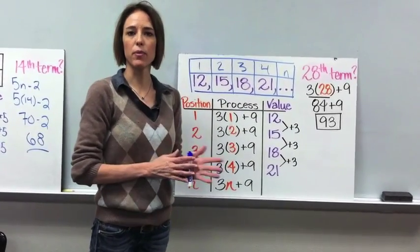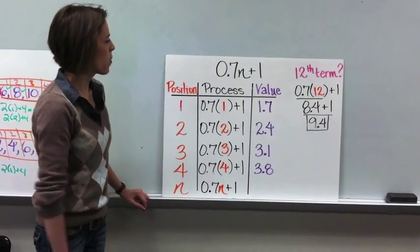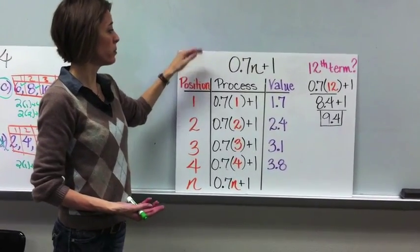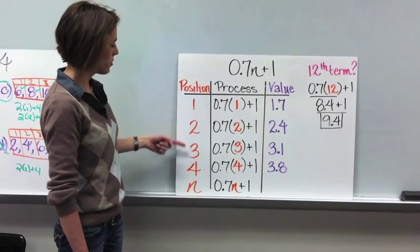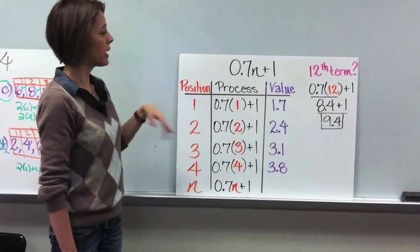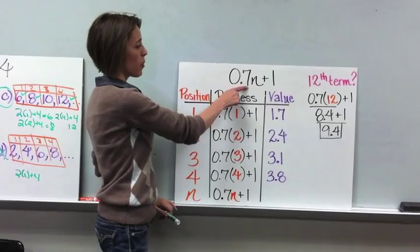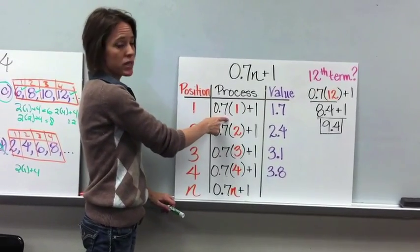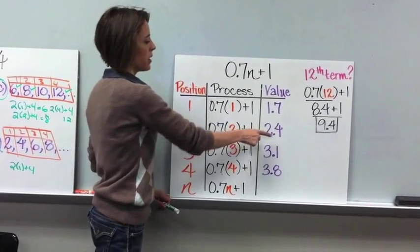Let's move on to example 3. Here is number 4 — this one is a little different. It gave you the expression and asked you to come up with the first four values when you put in position 1, 2, 3, and 4. You should have drawn your table listing positions 1, 2, 3, 4, and n. The process is still the same — we're taking 0.7, which is our common difference, and multiplying it by the term number. So 0.7 times 1 is 0.7, and you add 1 to get 1.7. Then plugging in 2, doing the multiplication, adding 1, gives you 2.4.